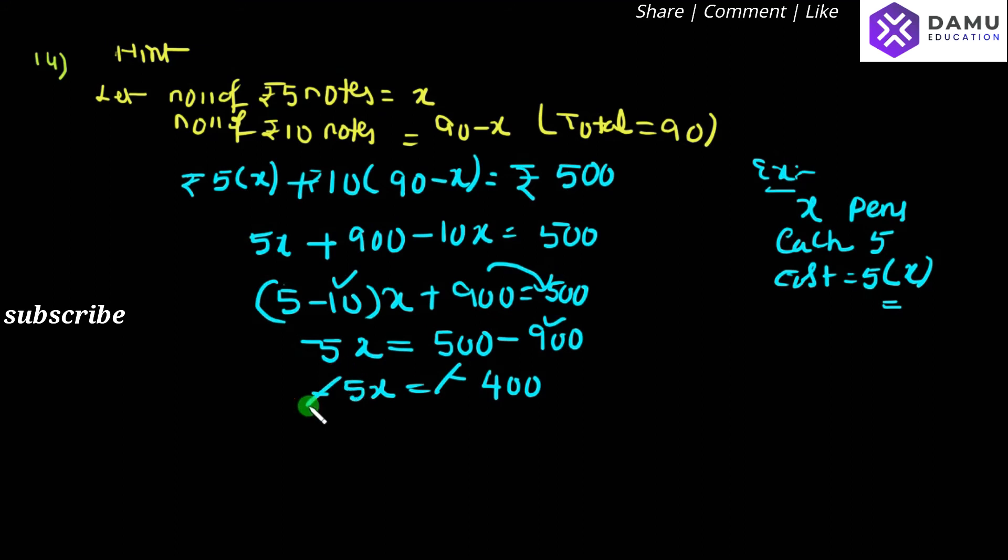So here minus minus will cancel. Then x will be equal to 400 divided by 5. 5 goes into 400, we get 80. Then x will be equal to 80. Therefore,